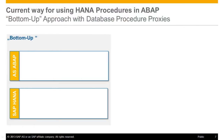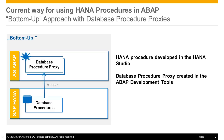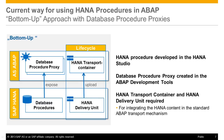First of all, let me put a context to this topic. The current optimized way for using HANA procedures in ABAP is provided by means of database procedure proxies, which were introduced with ABAP 7.4 Service Package 2. In this so-called bottom-up approach, a database procedure has first to be developed in the HANA server and then exposed as a database procedure proxy in the ABAP server. To ensure that dependent ABAP and HANA content is transported together, a HANA delivery unit and a HANA transport container are required.